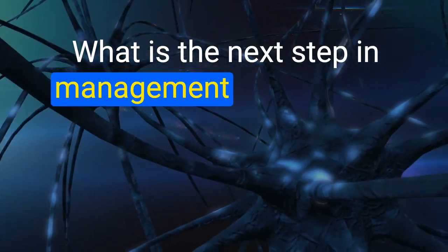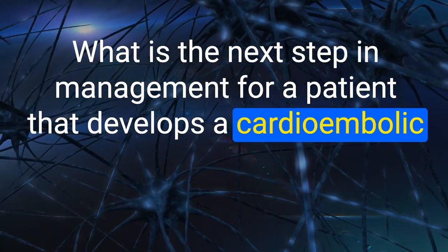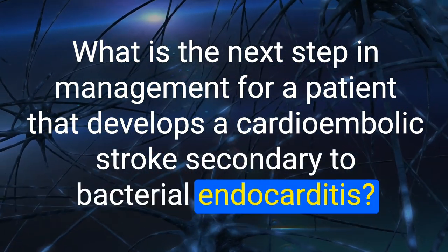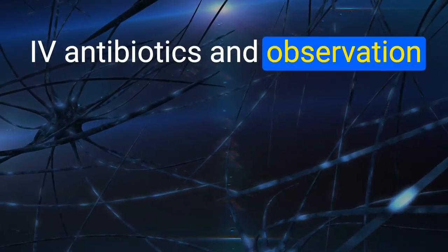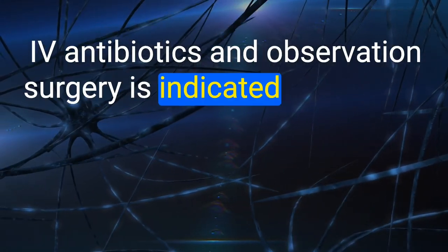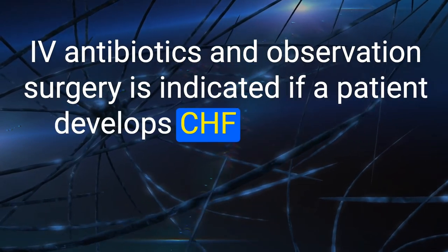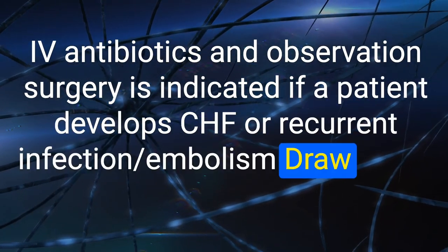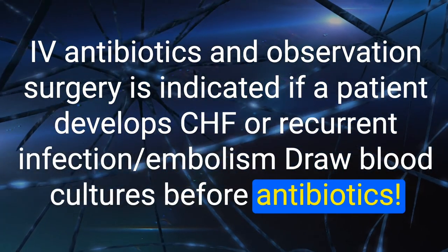117. What is the next step in management for a patient that develops a cardioembolic stroke secondary to bacterial endocarditis? IV antibiotics and observation. Surgery is indicated if the patient develops CHF or recurrent infection. Draw blood cultures before starting antibiotics.